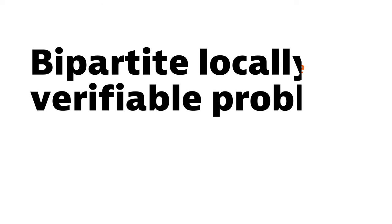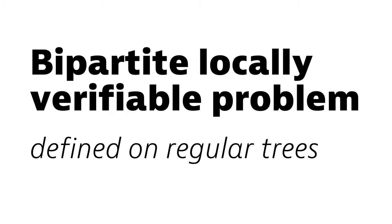Okay, so what does a bipartite locally verifiable problem look like? We will look at problems in regular trees. But this isn't usually any real restriction, as we are trying to prove negative results. If we can show that the problem can't be solved fast in regular trees, then certainly it can't be solved fast in general graphs. And it turns out that regular trees are the worst case for many problems.